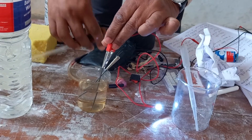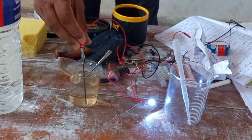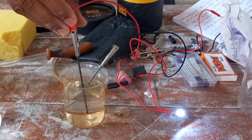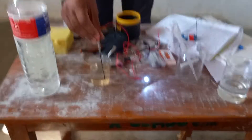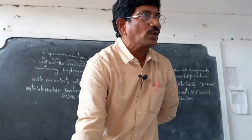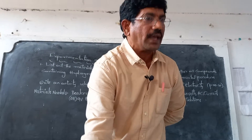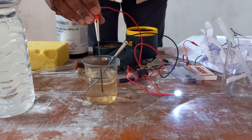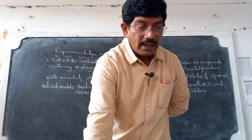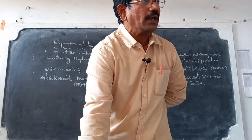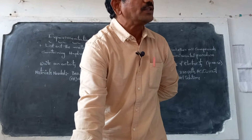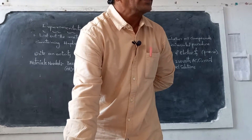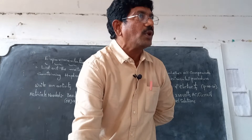Observe — is the bulb glowing? Yes, the bulb is glowing brightly. Why is the bulb glowing? When I add sulfuric acid to water it becomes an aqueous solution of sulfuric acid — dilute sulfuric acid. Dilute sulfuric acid splits into ions: H⁺ and HSO₄⁻. In the same manner, aqueous hydrochloric acid splits into H⁺ and Cl⁻ ions.